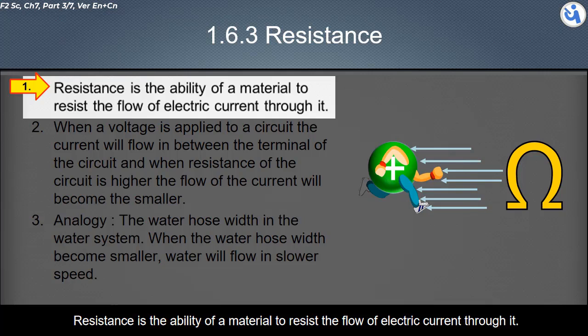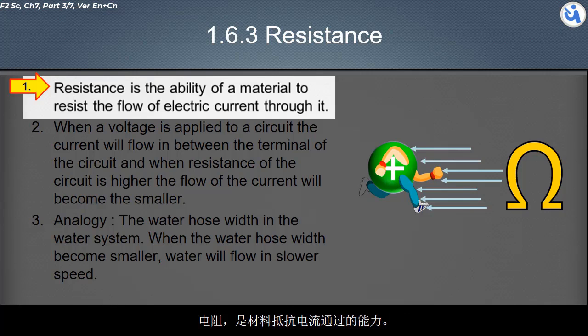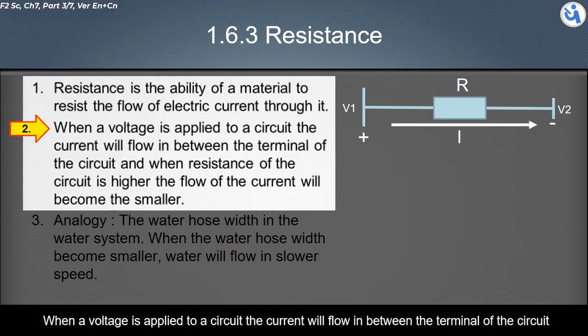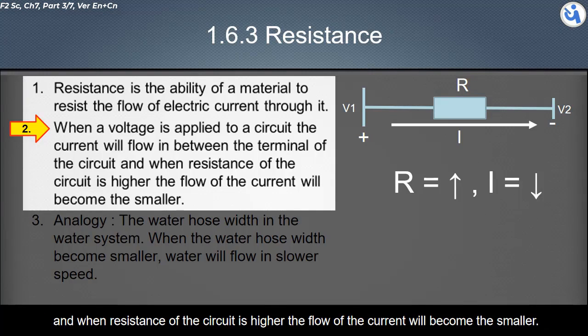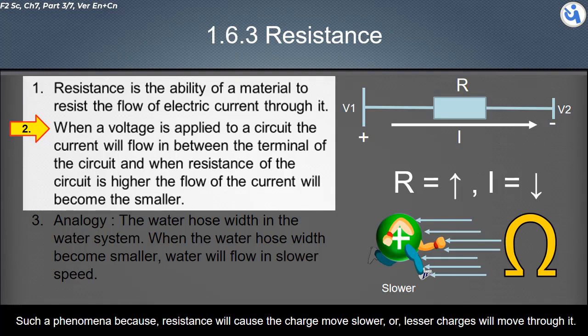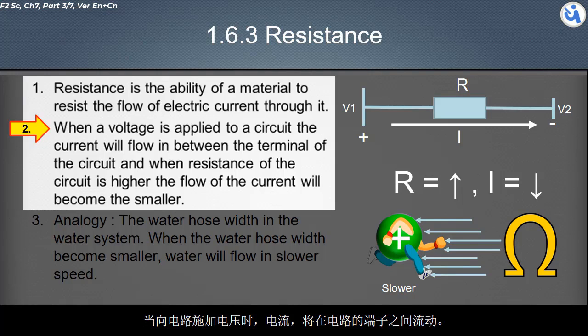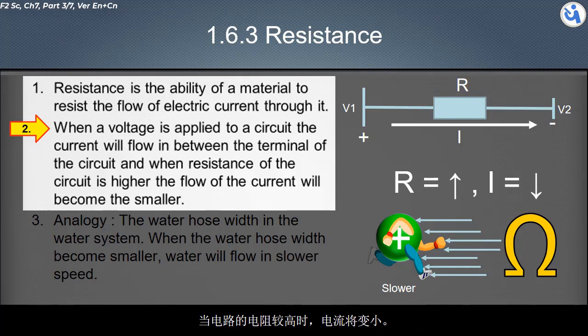Resistance is the ability of a material to resist the flow of electric current through it. When a voltage is applied to a circuit, current will flow between the terminals. When resistance of the circuit is higher, the flow of current will become smaller. Such a phenomenon occurs because resistance will cause the charge to move slower or lesser charges will move through it.